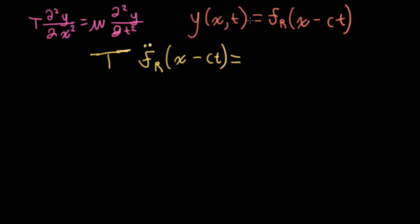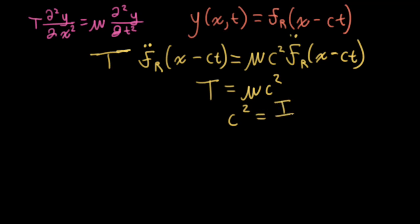On the right, we have the same thing. We'll have now mu on the right. So I have f r double dot, x minus ct, and now with the chain rule, when I take the double derivative with respect to time, I have a minus c that comes out twice. So the minuses cancel, and I get c squared. And notice that in order for this equality to hold in general, I would need t to be equal to mu c squared. So I need c squared to equal t divided by mu. So c is equal to square root of t divided by mu.